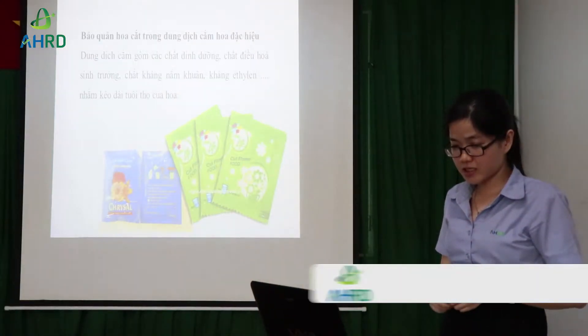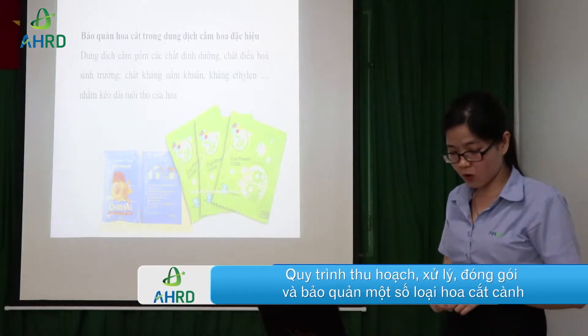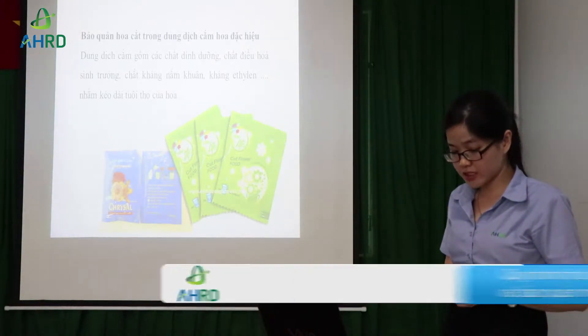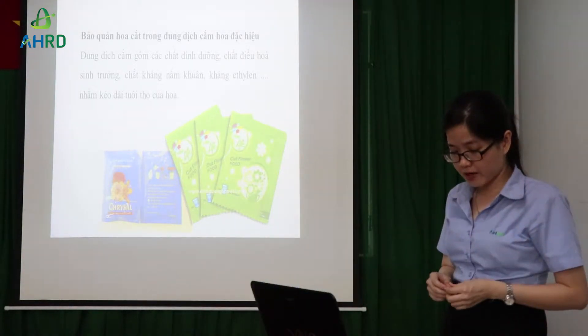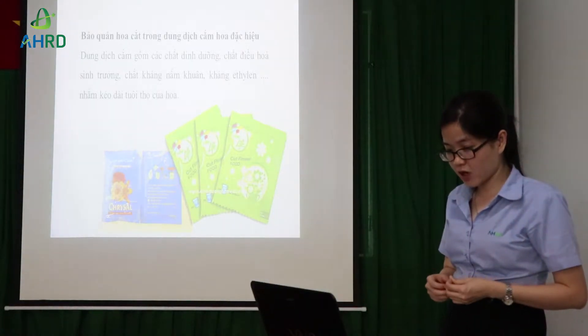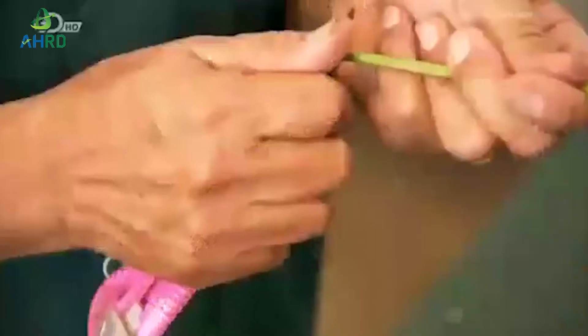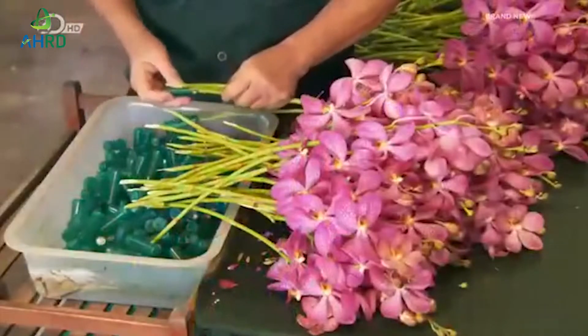Hoa cắt cành sau khi được phân loại sẽ được xử lý sơ bộ. Đây là bước quan trọng để giữ được chất lượng của hoa. Trước khi đóng gói, hoa sẽ được cắt một phần cuốn khoảng 5cm bằng dao bén, sau đó sẽ cắm vào túi nhựa chứa nước có nhiệt độ khoảng 40 độ C trong thời gian khoảng 20 phút, và sau đó hoa sẽ được cắm vào dung dịch đặc thù.